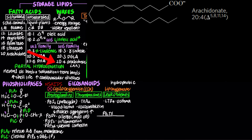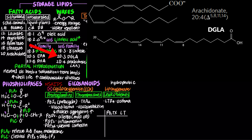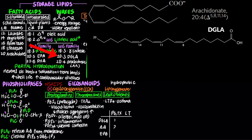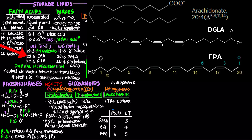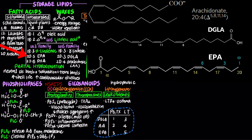Arachidonic acid (AA) is a precursor to the 2-series prostaglandins and thromboxanes and the 4-series leukotrienes. DGLA (dihomo-gamma-linolenic acid) is the precursor to the 1-series prostaglandins and thromboxanes and the 3-series leukotrienes. EPA is a precursor to the 3-series prostaglandins and thromboxanes and the 5-series leukotrienes.